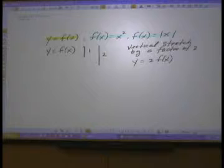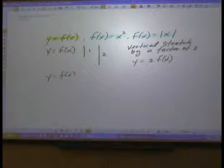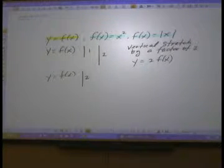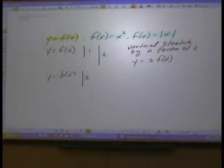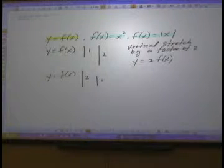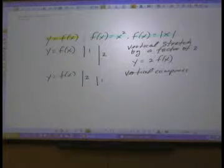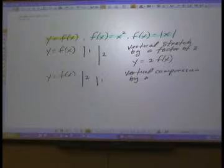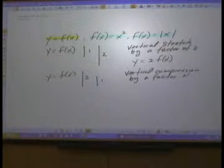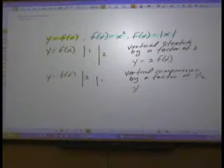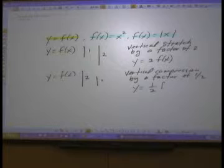Vertical stretch. Let's say we start initially with a function y is equal to f of x, and it's a vertical line that's two units long. Now we make a transformation and compress that vertical line so it's now one unit long. That represents a vertical compression by a factor of one-half. So we can write our function as y is equal to one-half f of x.